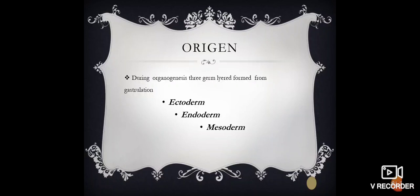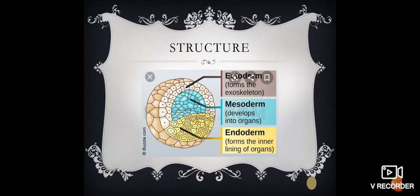I am going to move toward the origin. During Organogenesis, three germ layers are formed: Ectoderm, mesoderm, and endoderm. Here is their structure. Ectoderm forms exoskeleton. Mesoderm develops into organs. Endoderm forms inner lining of organs. Look at this diagram.